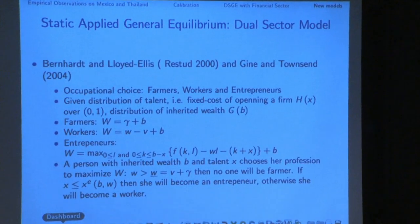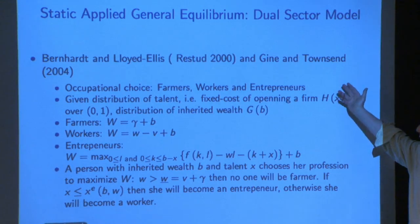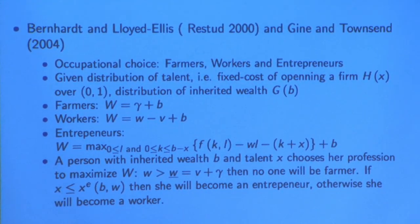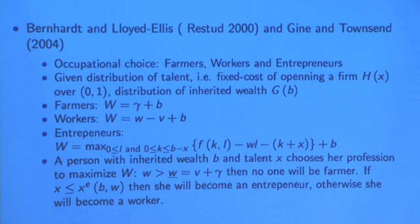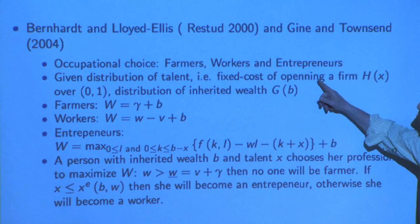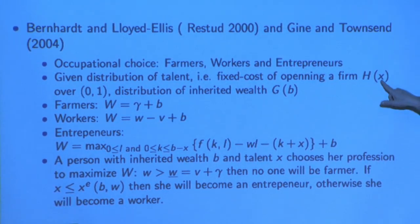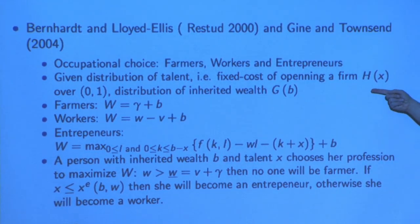So Lloyd-Ellis and Bernhardt — LEB for short — has three occupations: farmers, workers, and entrepreneurs. It's costly to set up a firm, but these costs are like talent; they vary with the individual. The more talented you are, the less costly it is. It's assumed that the cumulative distribution of talent is distributed according to capital H, where x is the level of cost.